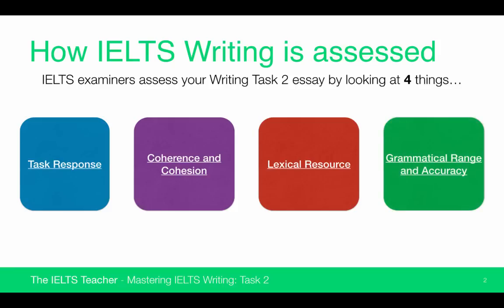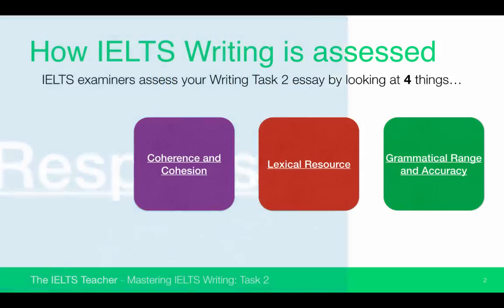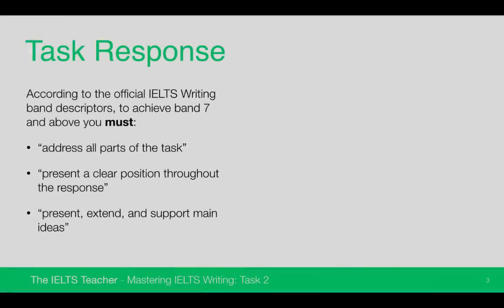Some of these terms might not make much sense to you, so we're going to look at each one in turn. Let's start with task response. According to the official IELTS writing band descriptors, to achieve band 7 and above in task response, you must address all parts of the task, present a clear position throughout the response, and present, extend, and support main ideas.